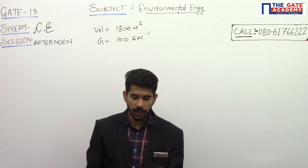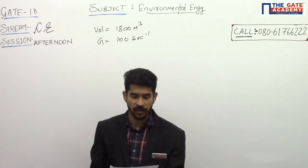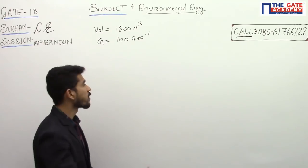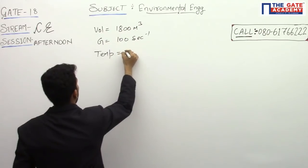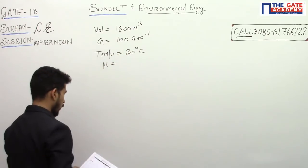Then he says the water temperature and dynamic viscosity are 30 degrees Celsius and 0.798 into 10 to the power minus 3 Newton seconds per meter square. That means temperature is 30 degrees C and dynamic viscosity of water is 0.798 into 10 to the power minus 3 Newton seconds per meter square.